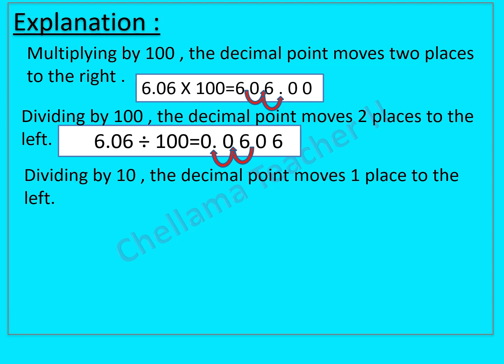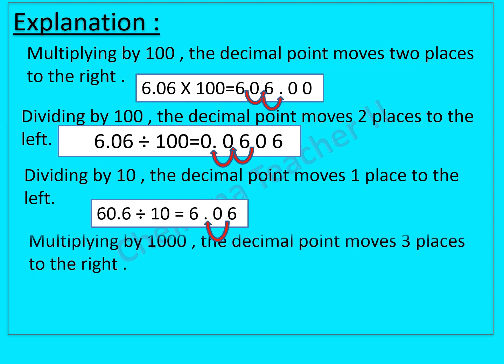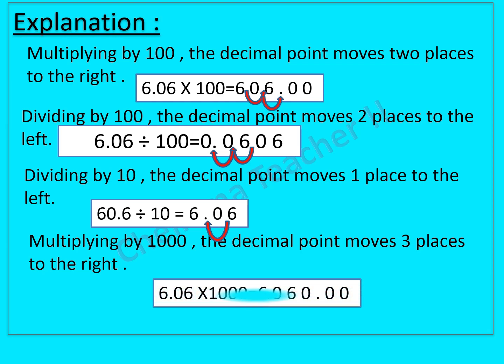Dividing by 10 moves the decimal point 1 place to the left: 60.6 ÷ 10 = 6.06. Multiplying by 1000 moves the decimal point 3 places to the right: 6.06 × 1000 = 6060. So the correct matching answers are displayed.